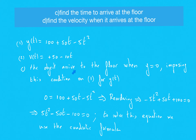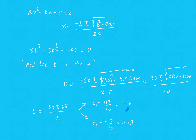Part C: find the time to arrive at the floor, measured from the instant you launched the object upward. When the object arrives at the floor, y equals zero. Setting y(t) = 0 gives a quadratic equation. Solving it yields two times; you choose the positive one because it is the physically meaningful solution. The result is t = 11.7 seconds.